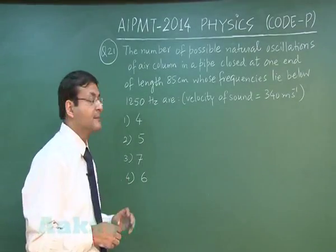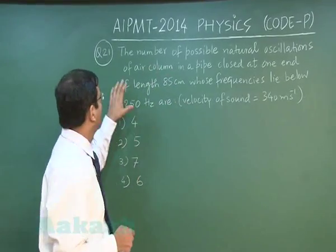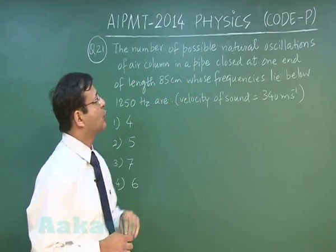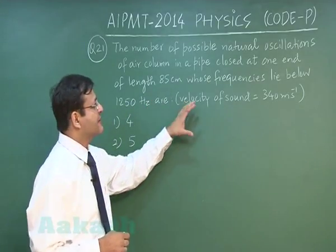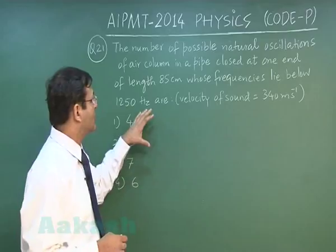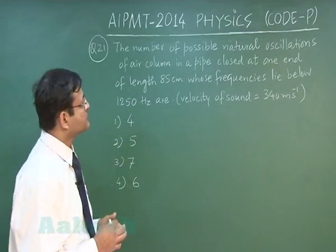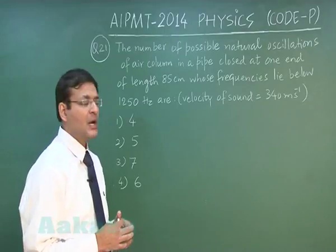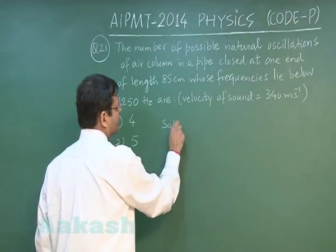In the next question, question 21, as it reads: the number of possible natural oscillations of air column in a pipe closed at one end of length 85 centimeter whose frequencies lie below 1250 hertz. Obviously this is a question of closed end pipe, and we need to find out what is the fundamental frequency for this.